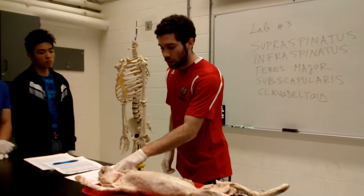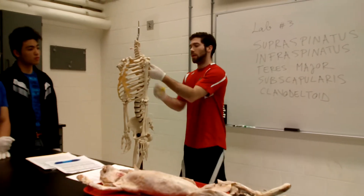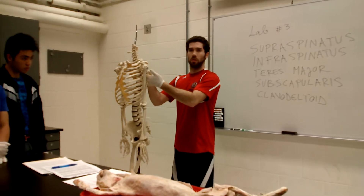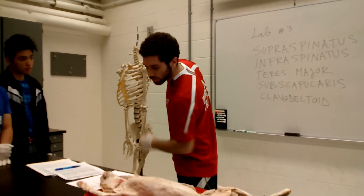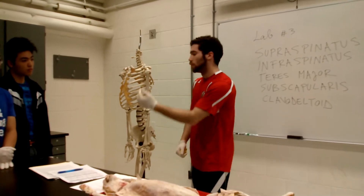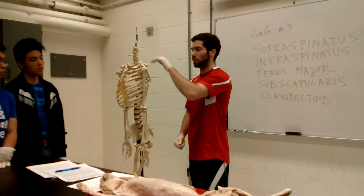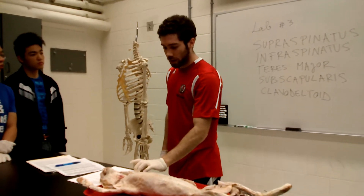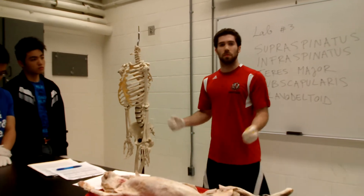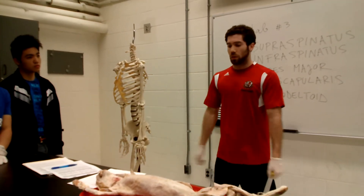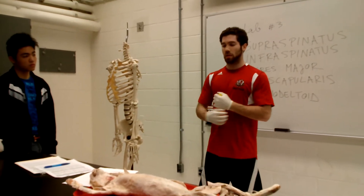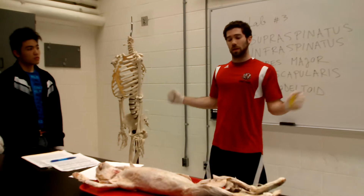Another internal rotator is subscapularis, the deep muscle on the inside wall. It originates on the subscapular fossa and inserts into the lesser tubercle of the humerus — slightly lower than supra- and infraspinatus. It also internally rotates the shoulder and provides stabilization. So the two internal rotators are teres major and subscapularis, while infraspinatus externally rotates.